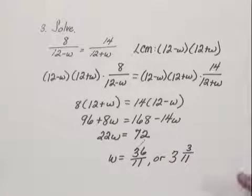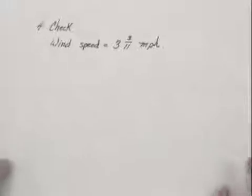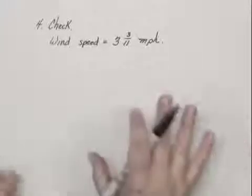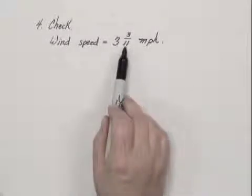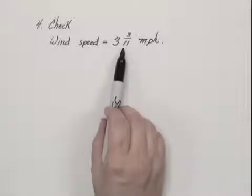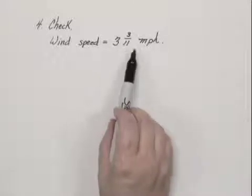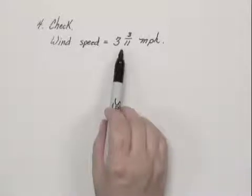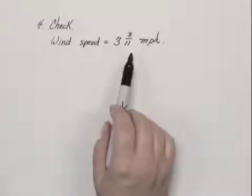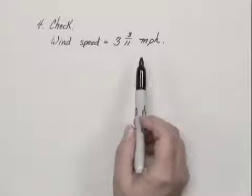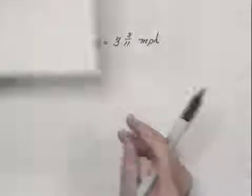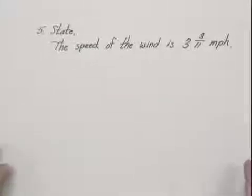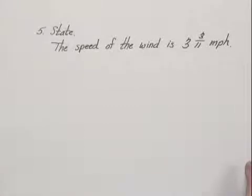So to check, we need to check a wind speed of 3 and 3 elevenths miles per hour. Now to check this, you might want to use a calculator because we have a fraction here. We would find the speed against the wind, which would be 12 minus 3 and 3 elevenths. We'd find the speed with the wind, which would be 12 plus 3 and 3 elevenths. And we would calculate the time that it took to travel the given distances with those speeds. And we would find that the times would be the same, so this does check. And so we state then that the speed of the wind is 3 and 3 elevenths miles per hour.